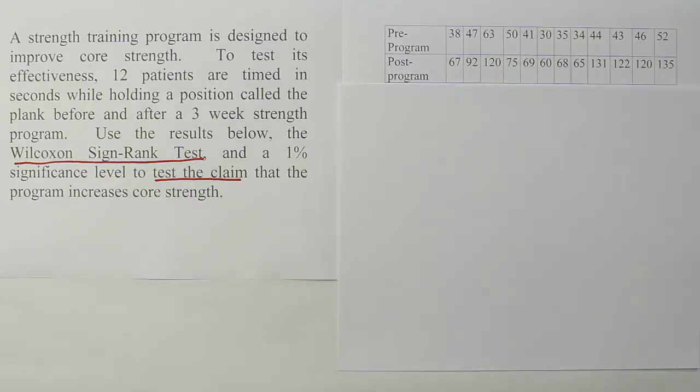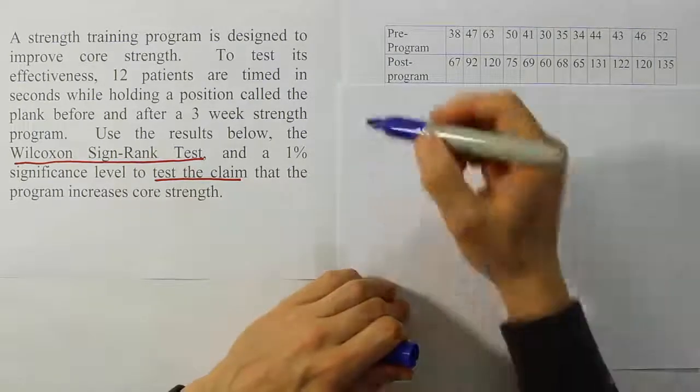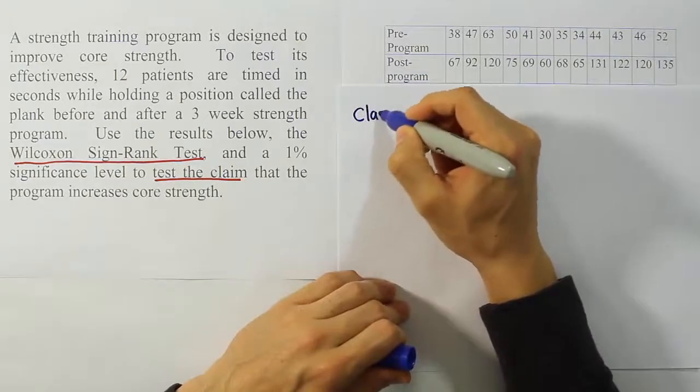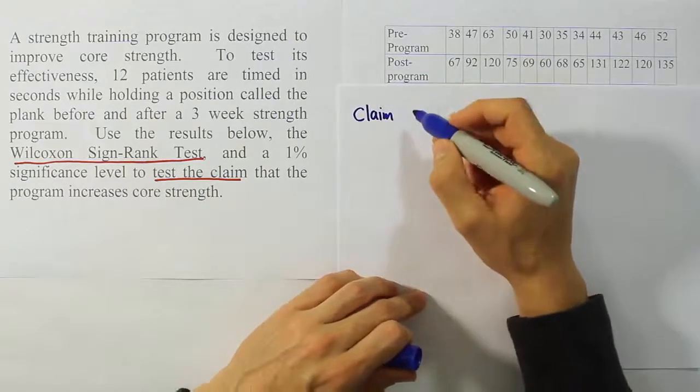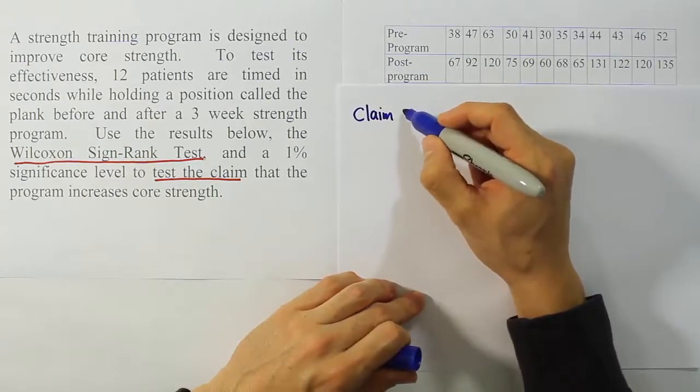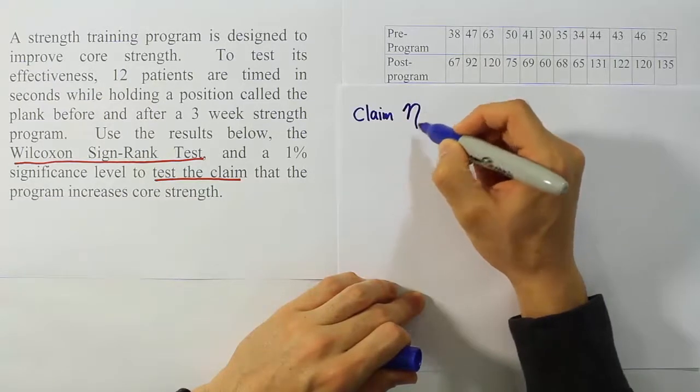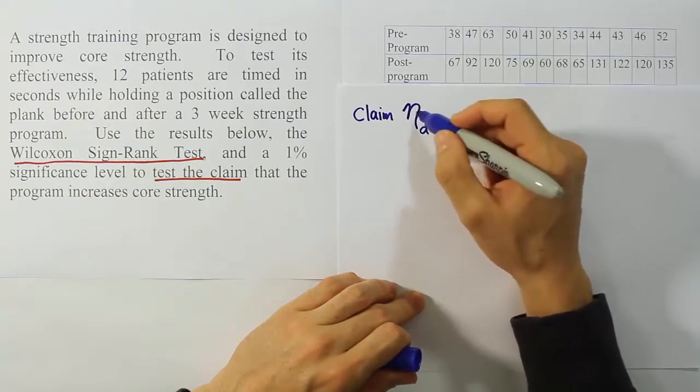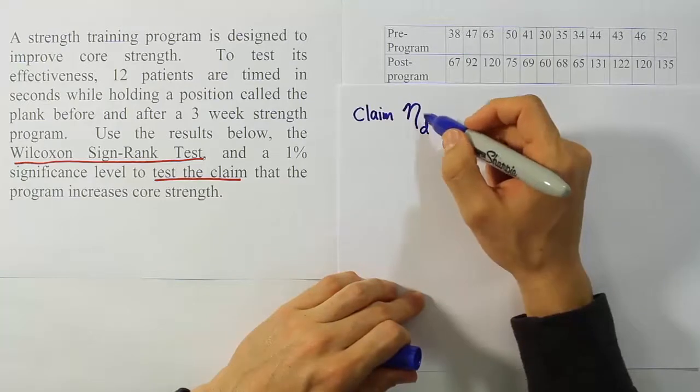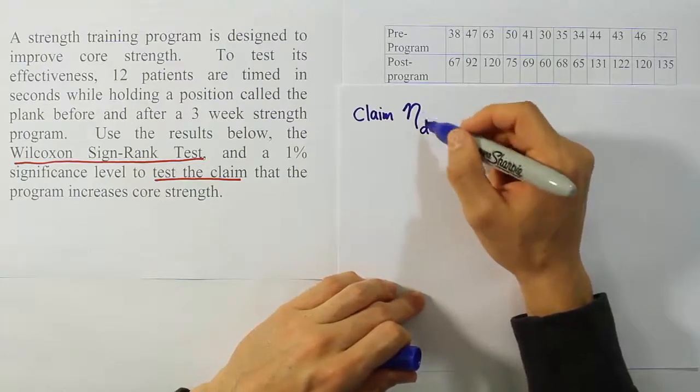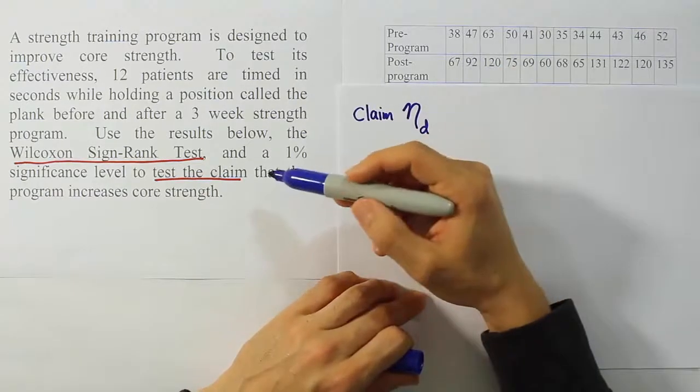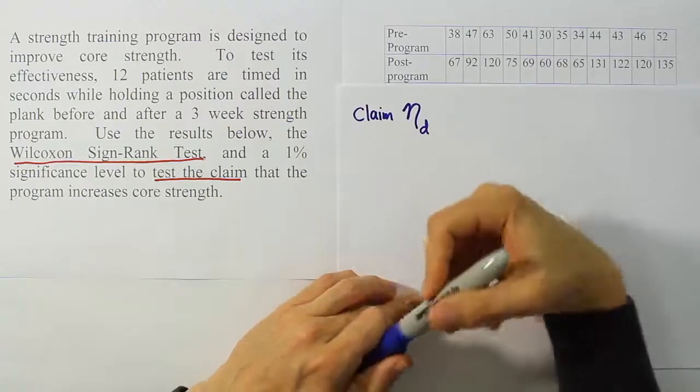Alright, so what we want to do then, because we're using the Wilcoxon Sign-Rank Test, is begin by specifying the claim in the problem. So let's go ahead and do that first. So the claim for the problem is going to involve eta, and we can actually look at something called eta_d, which is the median difference, the population median difference. And we can talk about what that's going to be based on this claim.